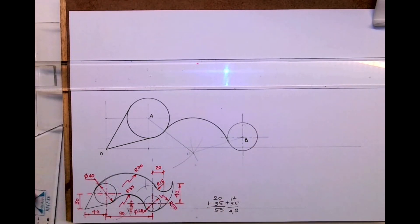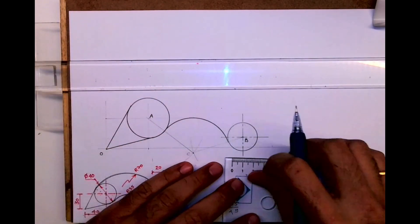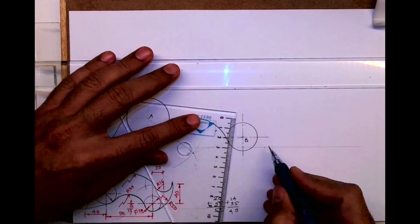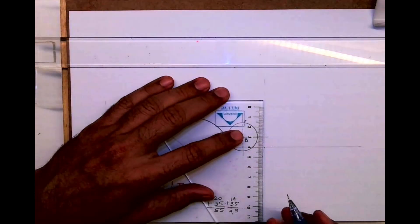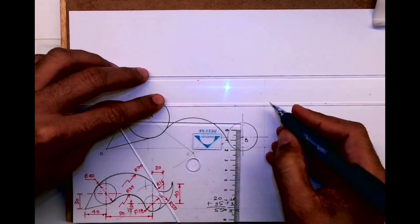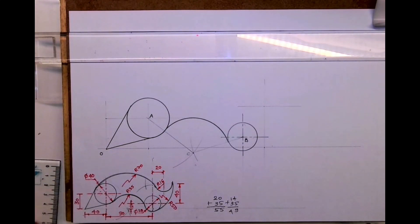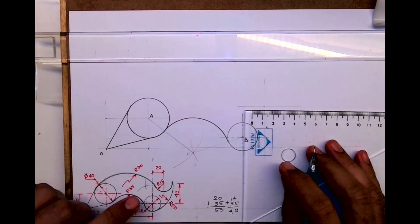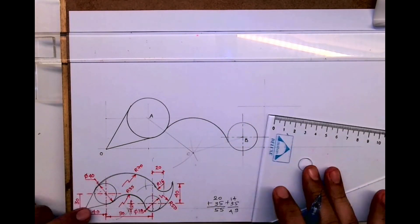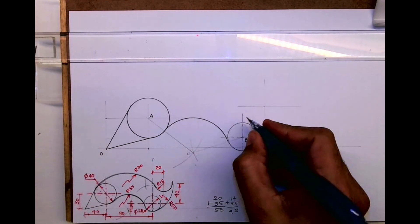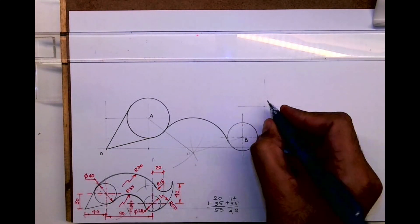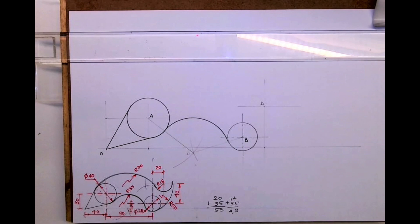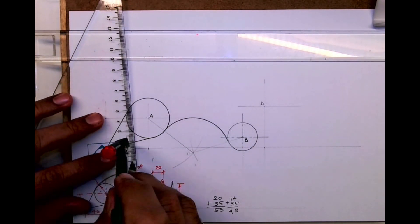After that we need to draw this radius 50. So take 20 and go up by 40. You'll get the center point for radius 16. This is point D, so from point D we'll take radius 16 and we'll draw the arc.